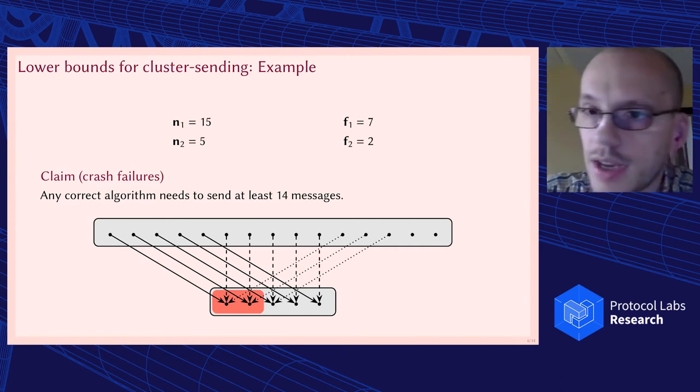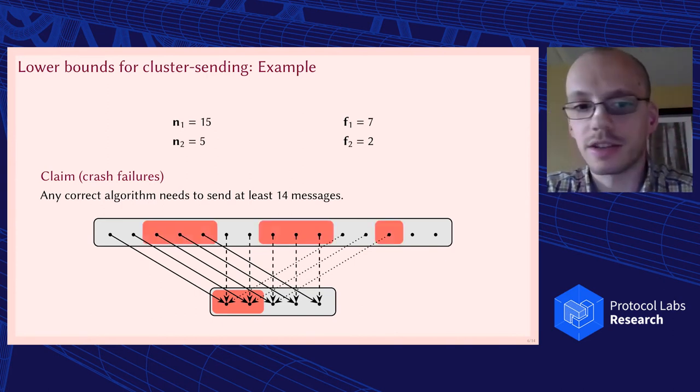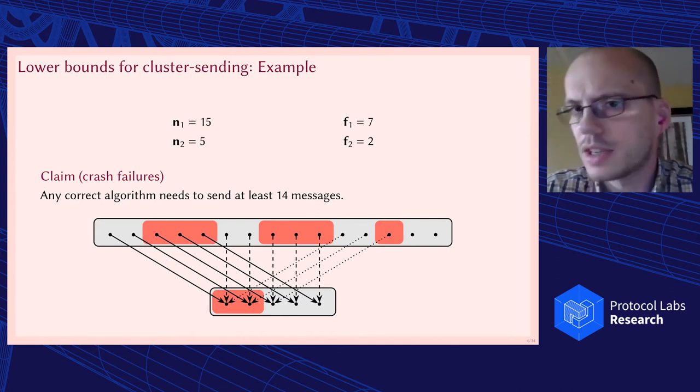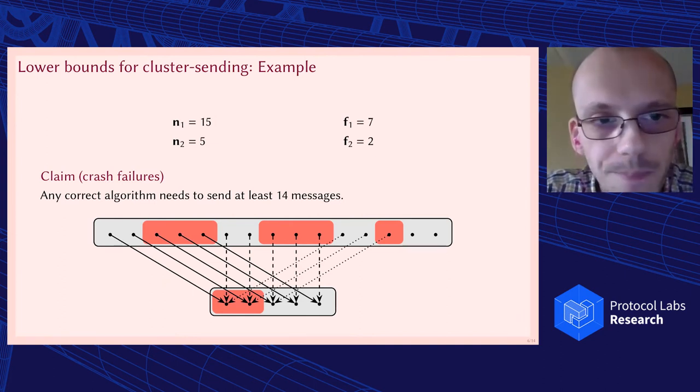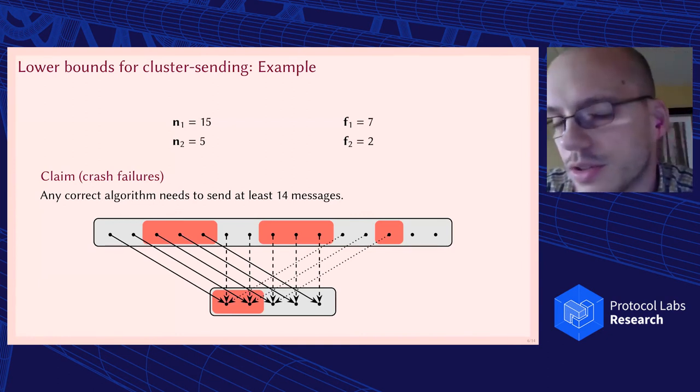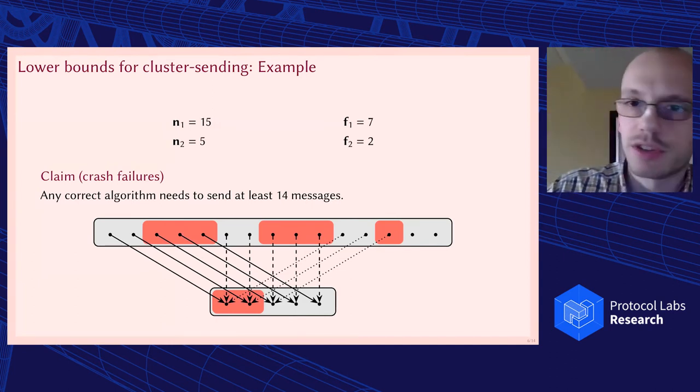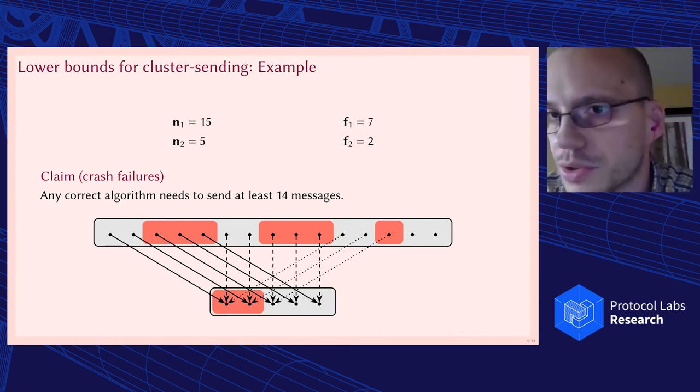If we do that, we have seven messages left, and we have 13 messages in total, and we have seven replicas that could be faulty in the sending cluster. So no matter how I send my 13 messages, I can always pick my faulty replicas in this way to make sure that nothing happens. This is for crash failures. You can also do a similar analysis for Byzantine failures, but you're going to have a factor two somewhere. And you can also do a similar analysis if you have a cluster sending certificate via threshold signatures, and that's reduced to this case again. But the idea is all the same.